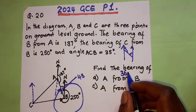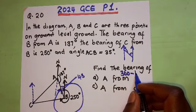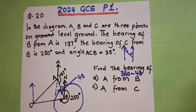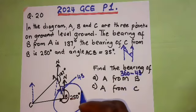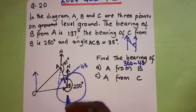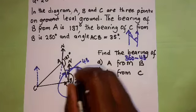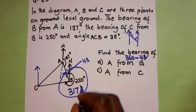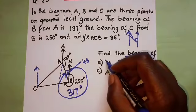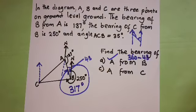360 minus 43, let's do that. What are we going to get? This is going to give us 317 degrees. That's the answer for the first one.